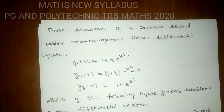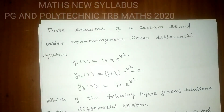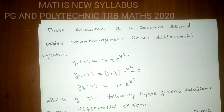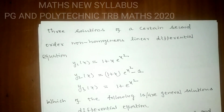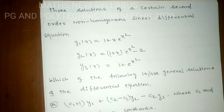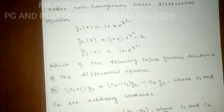Let's see the problem. Three solutions of a second-order non-homogeneous linear differential equation are given by: y1(x) = (1 + x)·eˣ², y2(x) = (1 + x)·eˣ² − 1, and y3(x) = 1 + eˣ². Then which of the following is the general solution of the differential equation?